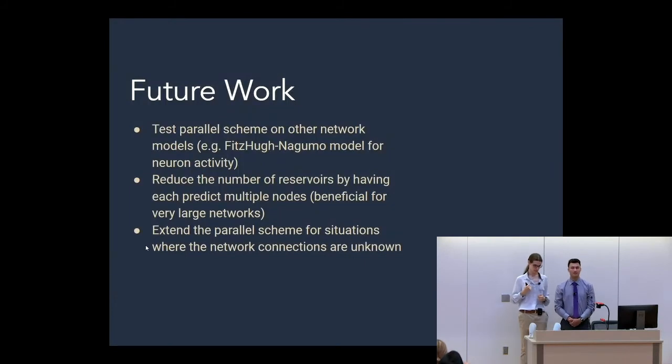Some future work that we can do is to test this parallel scheme on other network models, some neuron activity models such as FitzHugh-Nagumo. We can reduce the number of reservoirs by having each one predict multiple nodes.